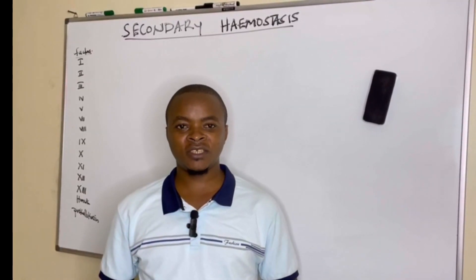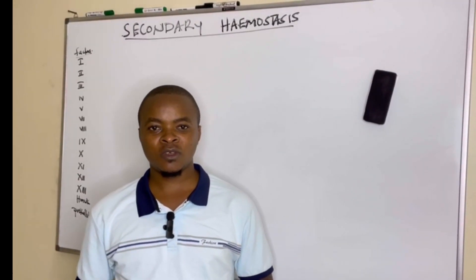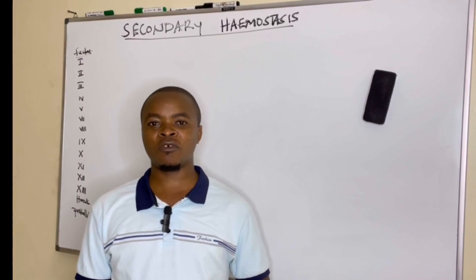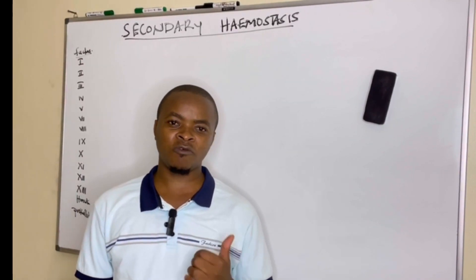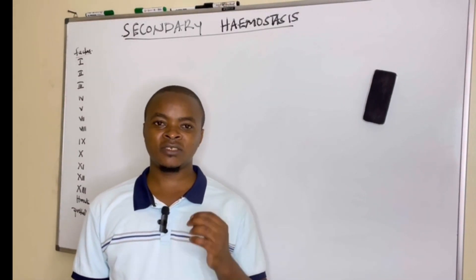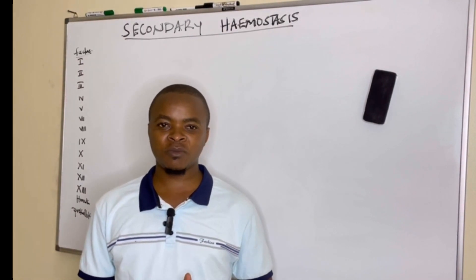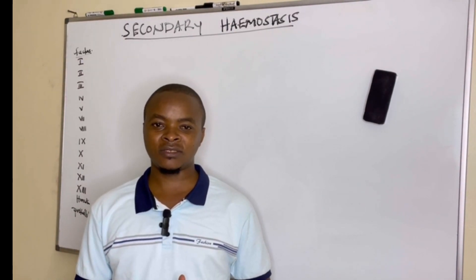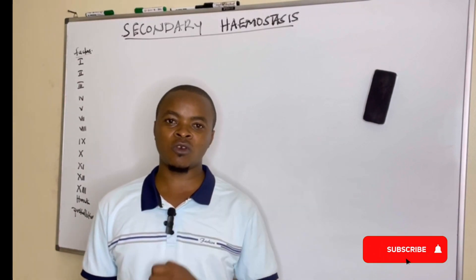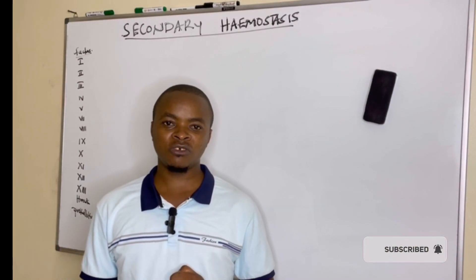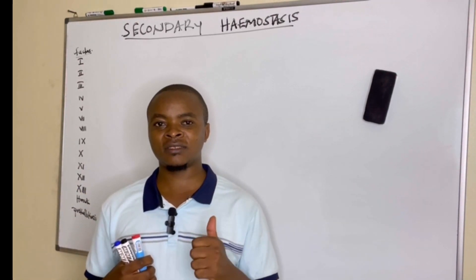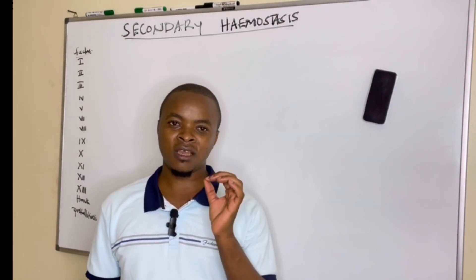In today's session at Medical Sciences, we want to discuss secondary hemostasis. Hemostasis is the stopping of blood flow, what we call stopping of bleeding. Hemostasis is divided into three: primary hemostasis, secondary hemostasis, and fibrinolysis. In today's session we want to focus on secondary hemostasis, which is known as coagulation — the process whereby we form a fibrin mesh that strengthens the product of primary hemostasis, which is the platelet plug.